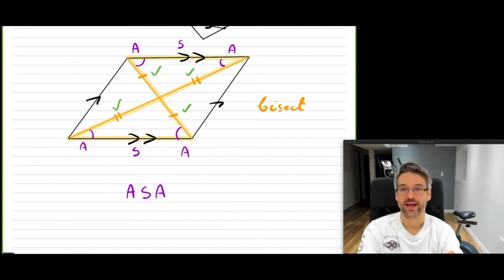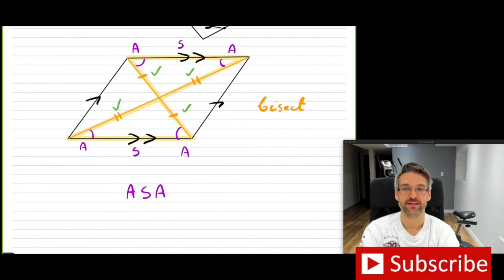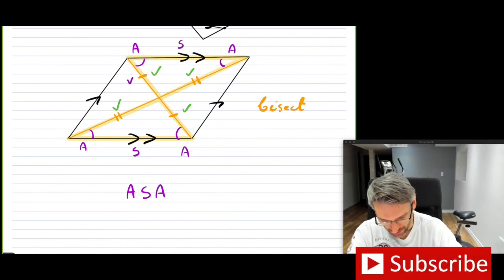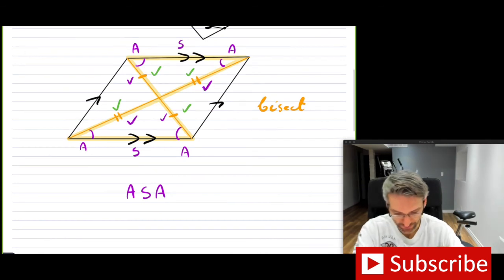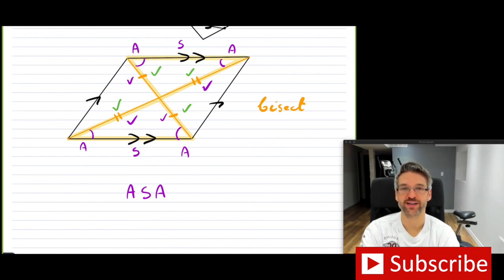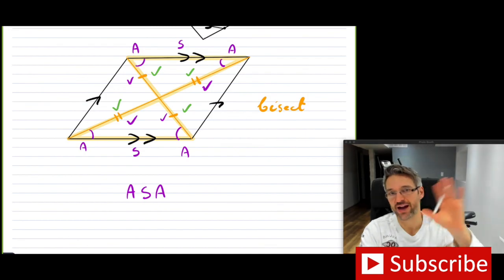With that, we've shown that the diagonals of a parallelogram bisect each other. We'll see you in a future video. Bye, everybody.